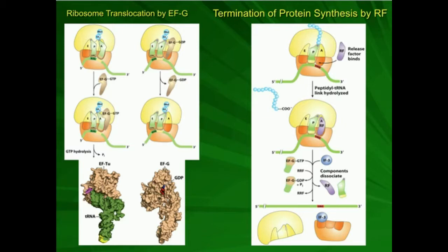Initially, EFG-GTP is going to come in — just like we saw in the last video — along with something called IF3. There's another protein called RRF that's going to come in and force the EFG-GTP to hydrolyze the GTP. That's going to cause the EFG-GTP to leave, RRF to leave, the tRNA to leave, and the release factor to leave as well. The whole point is that when the release factor comes in, it catalyzes a series of processes that ultimately cause the entirety of the ribosome to disassemble.